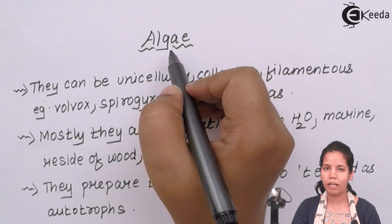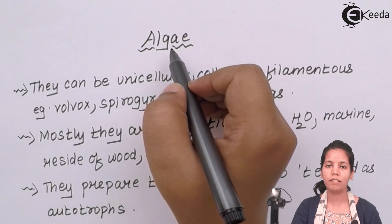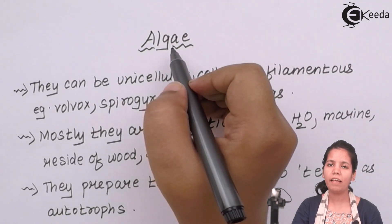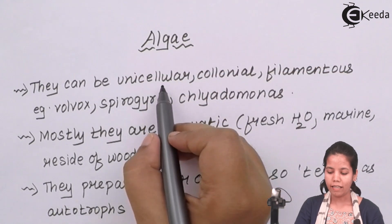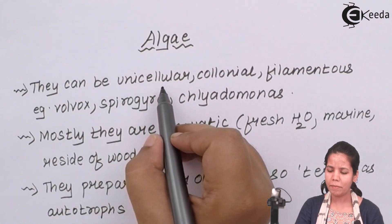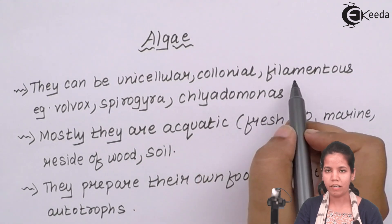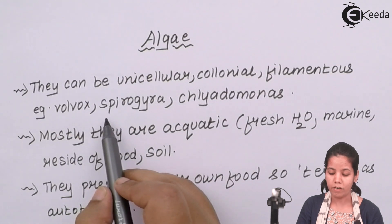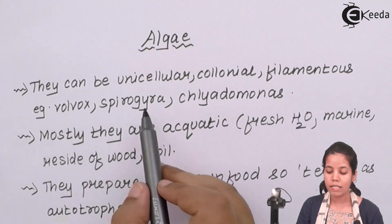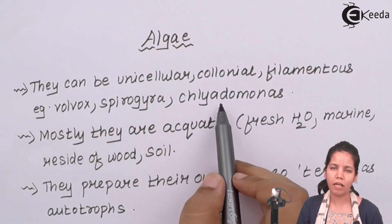Algae is the green-coloured, matted growing organism present on leaves, roots, plastic on your rooftop in rainy season. Algae can be unicellular — a single cell — colonial, living in groups, or filamentous. Various forms of algae include Volvox, Spirogyra which is filamentous, and Chlamydomonas which is sometimes colonial.